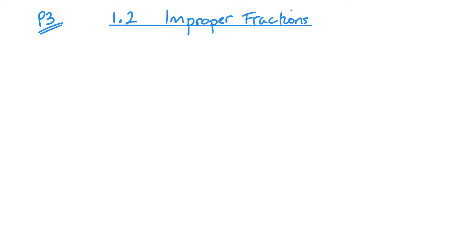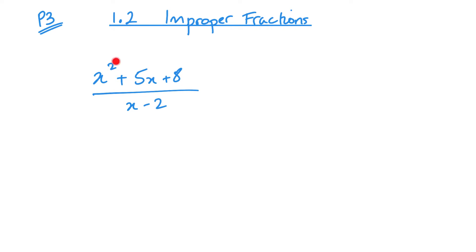Welcome to P3 unit 1.2: improper fractions. An improper fraction is when the degree of the numerator is either equal to or greater than the degree of the denominator. When talking about degree, I mean essentially the largest power. For example, x squared plus 5x plus 8 over x minus 2 — the largest power on top is squared, on the bottom is just 1, so this is an improper fraction.